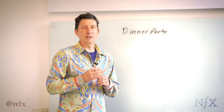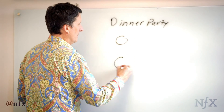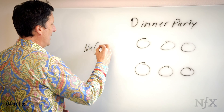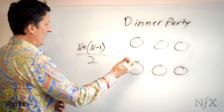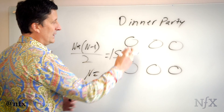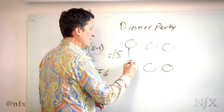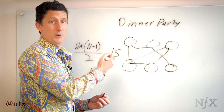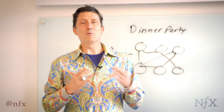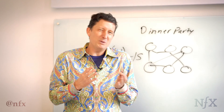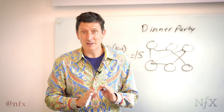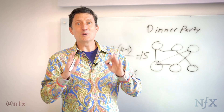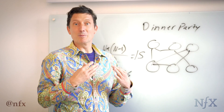A great example of network math is to think about a dinner party. How many possible two-way conversations could there be? The formula is n times (n minus 1) divided by 2. If you have six people, that's 15 independent two-way conversations. That's a lot. If you want to have one conversation — an intimate dinner — you're going to need to suppress 14 of those conversations. This is why we intuitively sense we probably shouldn't have more than six or eight people at the dinner table if we want one flowing conversation; otherwise it gets out of control.